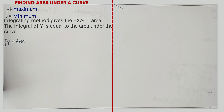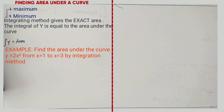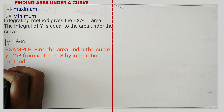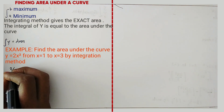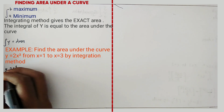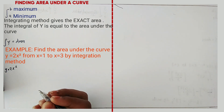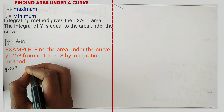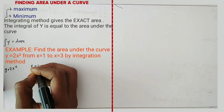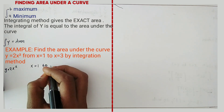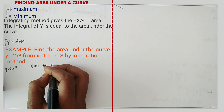An example says: find the area under the curve Y = 2X² from X = 1 to X = 3 by integration method. In this case you have been given Y = 2X², and the limits are X = 1 and X = 3.